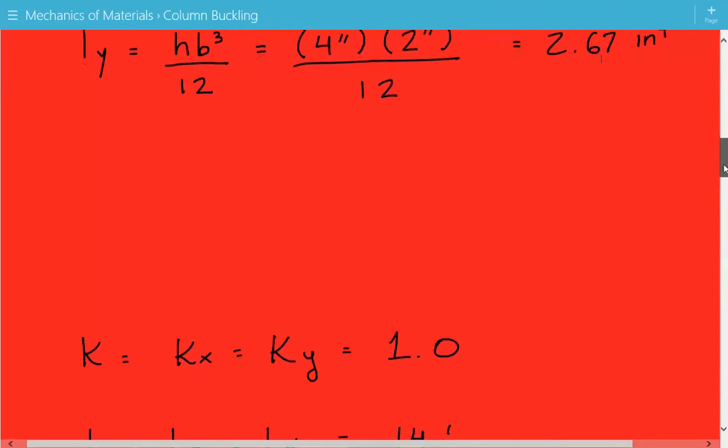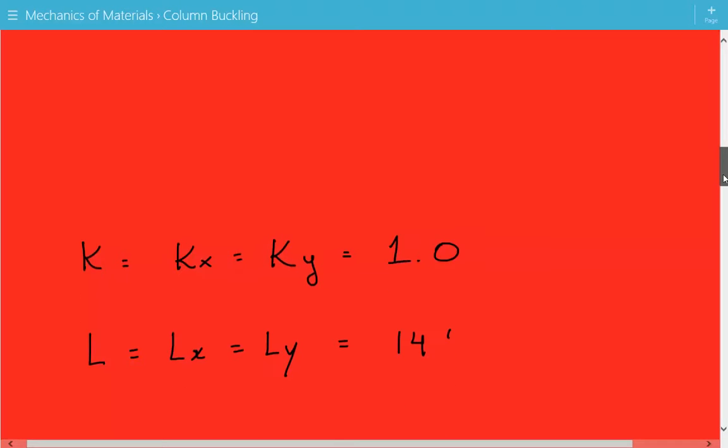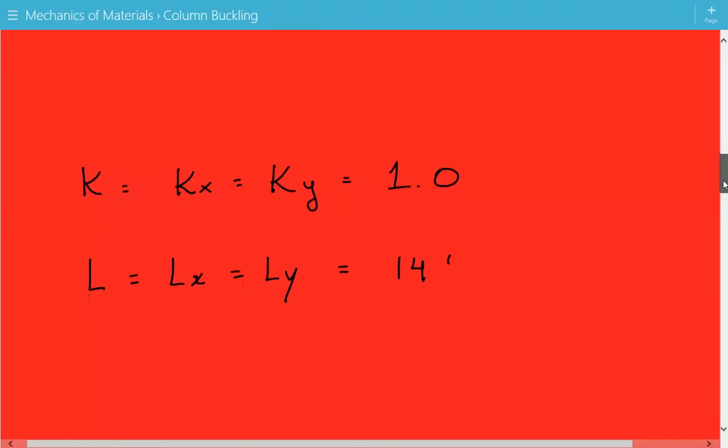The effective length factor k for both axes is equal to 1.0 because it's pinned at both ends. The unbraced length for both axes is equal to 14 feet because we don't have any intermediate bracing, so it's just the same for both axes.